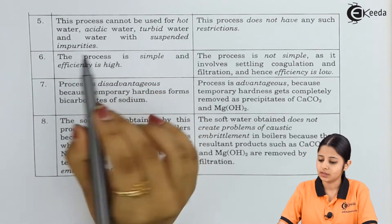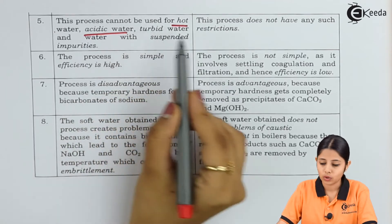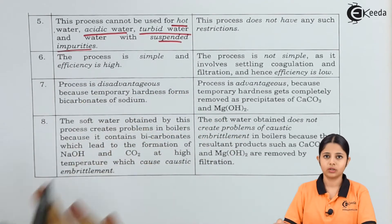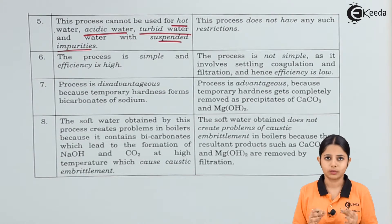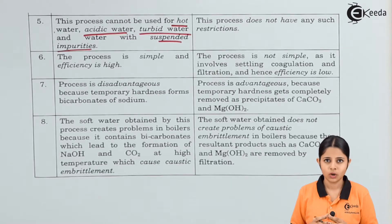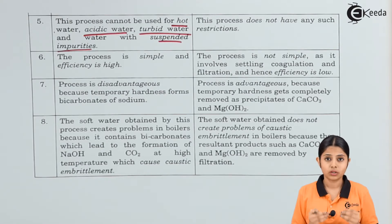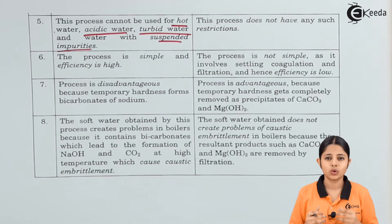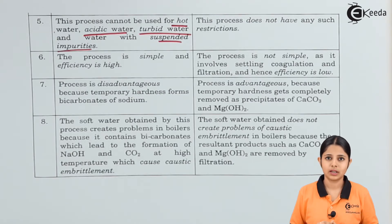Point five: the zeolite process cannot be used for hot water, acidic water, turbid water, or water with suspended impurities. Hot water may come from sources like desert wells or water containing microorganisms whose body heat raises the temperature. At high temperatures, zeolite chemicals will not react properly with impurities and may actually make the water more impure. Therefore the zeolite process is unsuitable for hot water.